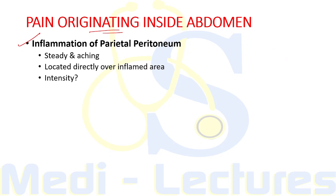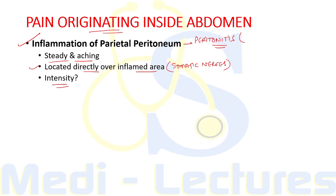Pain due to inflammation of the parietal peritoneum — peritonitis — can occur when bowel contents are released into it, causing irritation and inflammation. The character of this pain is steady and aching, located directly over the inflamed area, since pain is transmitted by the somatic nerves supplying the parietal peritoneum. The intensity depends upon the type and amount of material to which the peritoneal surface is exposed in a given time.